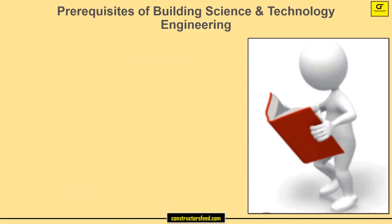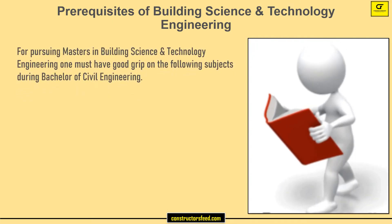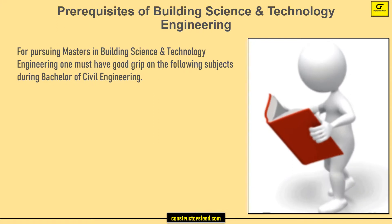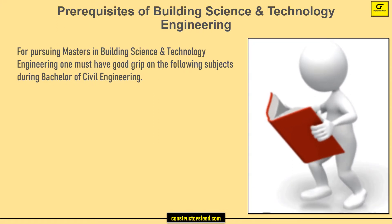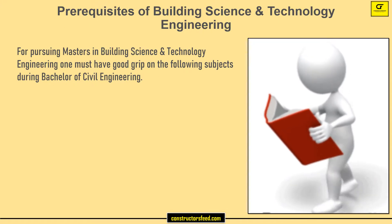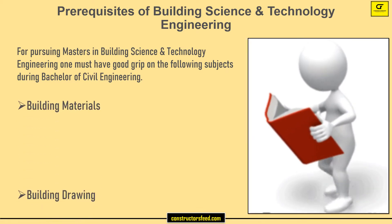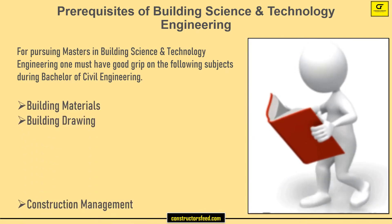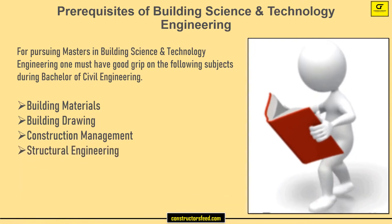Prerequisites of Building Science and Technology Engineering: For pursuing a Masters in Building Science and Technology Engineering, one must have a good grip on the following subjects during Bachelor of Civil Engineering: Building Materials, Building Drawing, Construction Management, and Structural Engineering.